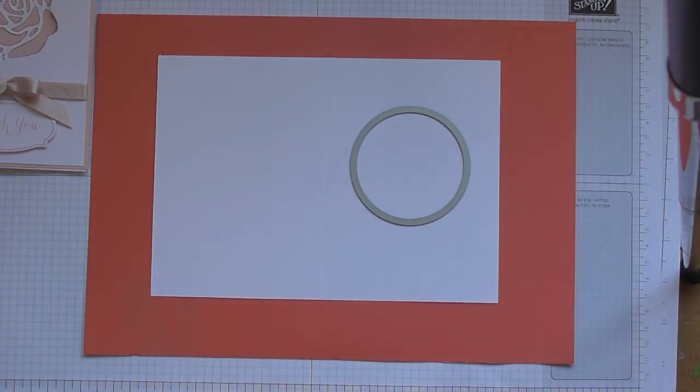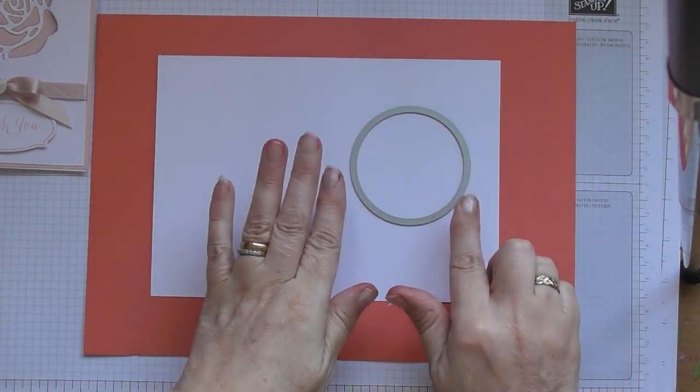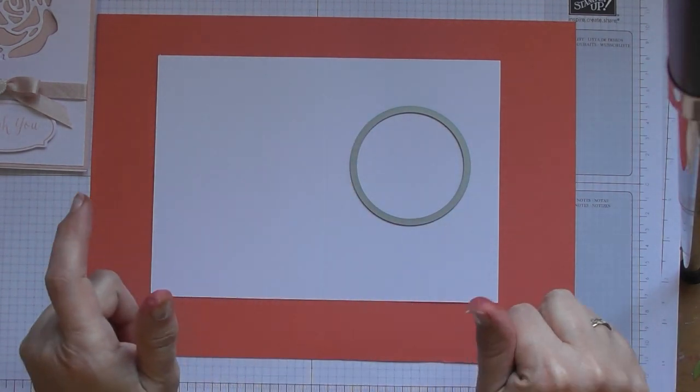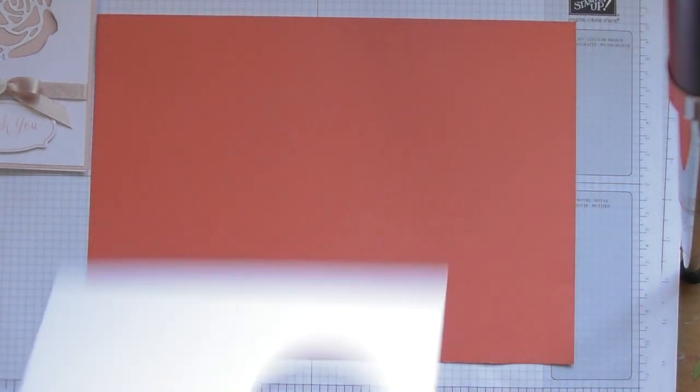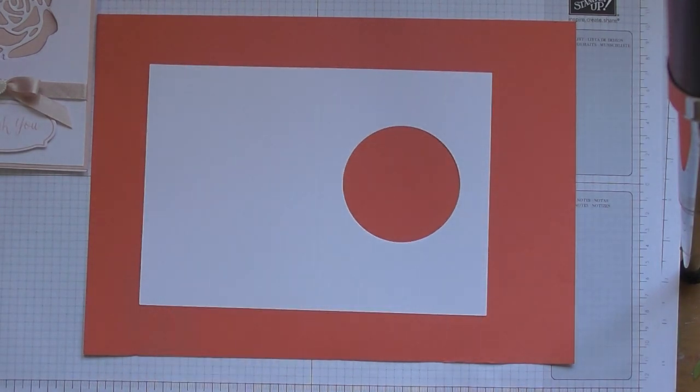And it can be any shape die. Then tape that into place with some low-tack tape, run it through your die cutting machine, and then you'll end up with a hole in your card, which is your aperture.